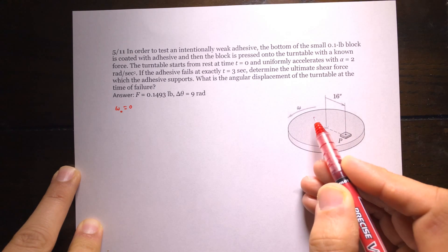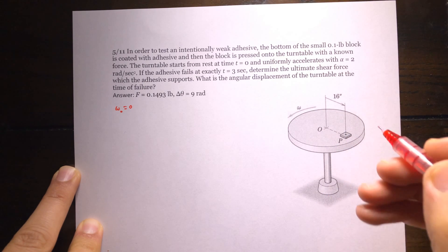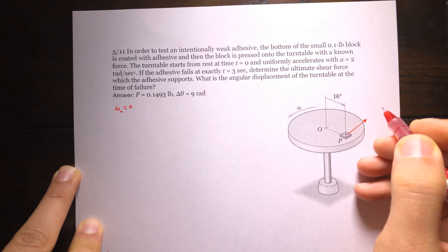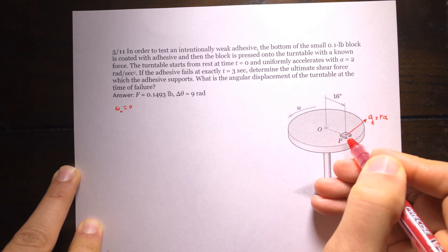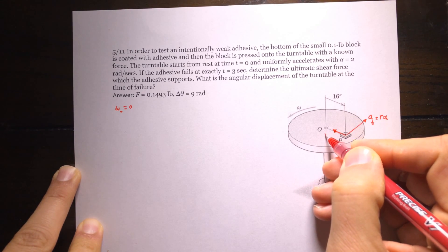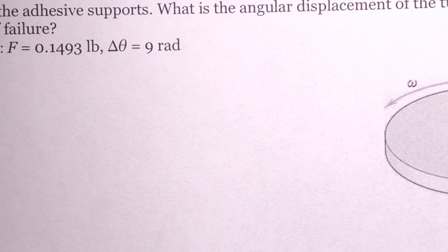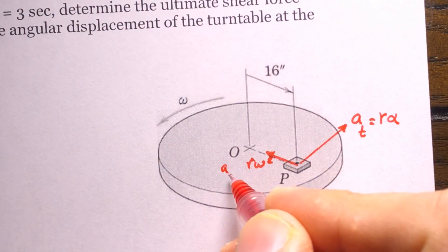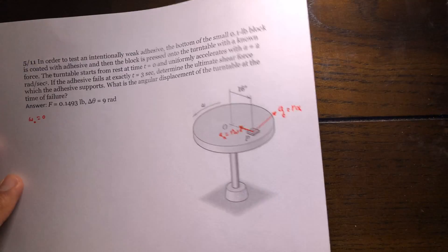To calculate the acceleration of this block at that moment — because this block is moving on a circle — acceleration is going to have two components: acceleration in the tangential direction, which equals r times alpha, and acceleration toward the center, or acceleration in the normal direction, with magnitude r times omega squared.